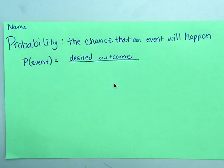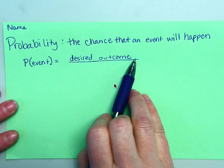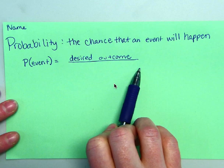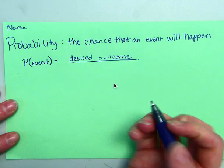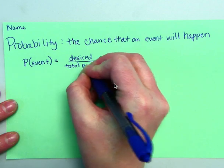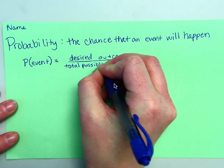The first one is desired outcome. So desired outcome, if I was supposed to say probability that you would get a red M&M, then you'd say, well how many red M&Ms are there? And then you'd put it over total number of outcomes or total number of M&Ms.